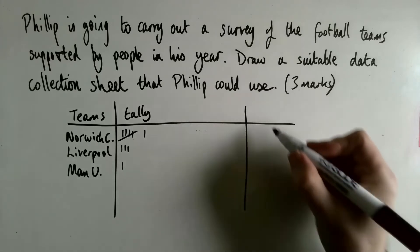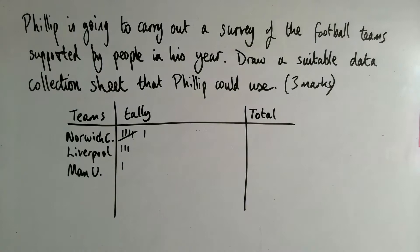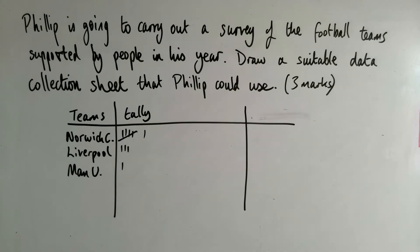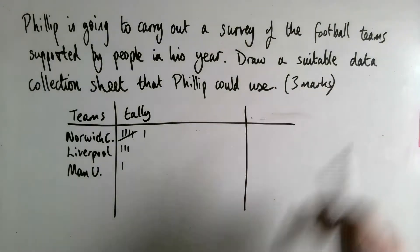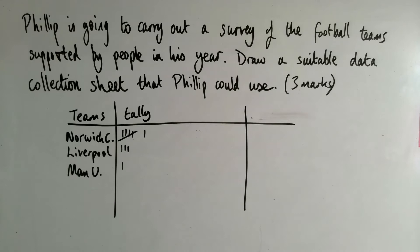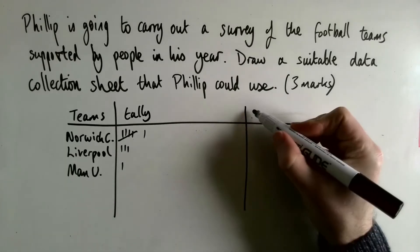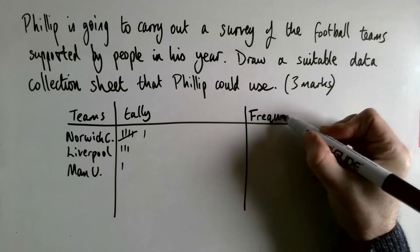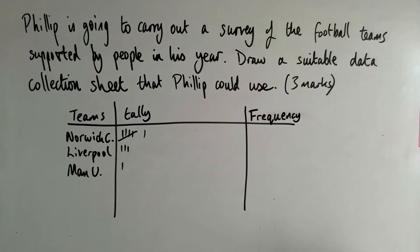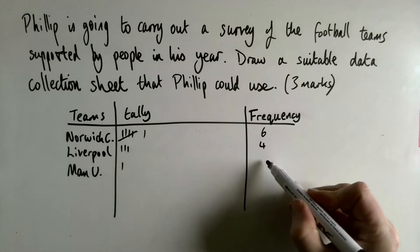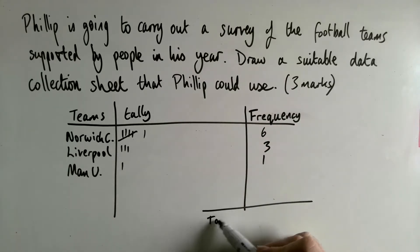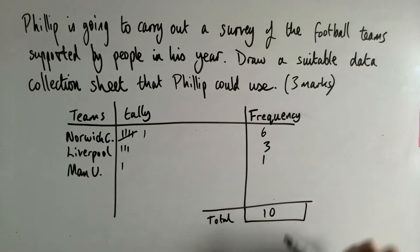There are two marks for what we've done so far. Often people get those two marks but then lose a mark here because they put the word 'total' — but that's not the total. The total is going to be how many people he's seen altogether, and you don't even need to put the total on the collection sheet; you only need that when you start analysing it later. This column is showing how many people like Norwich, how many like Liverpool, Man United, and so on. The word we need begins with F — frequency. So frequency is how often something happens. Norwich: six, Liverpool: three, Man City: one. If you wanted a total at the bottom that would add up to ten, but you don't need that to get the mark.